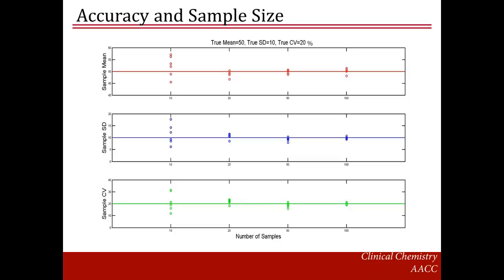When estimating the distribution's parameters — mean, SD, CV — the sample size is very important. The bigger the sample, the more precisely you will estimate the correct parameter values. To illustrate this, let's see how well we estimate the correct parameters when the true mean is 50, true standard deviation is 10, and true coefficient of variation is 20%. In reality, we wouldn't know these true values — here I do, because I am simulating data from these true values. We estimate the distribution parameters with sample sizes of 10, 20, 50, and 100.